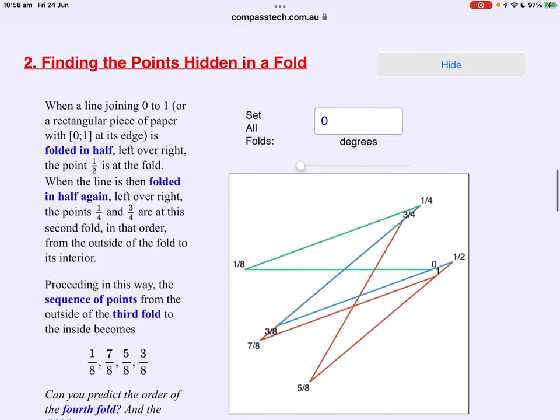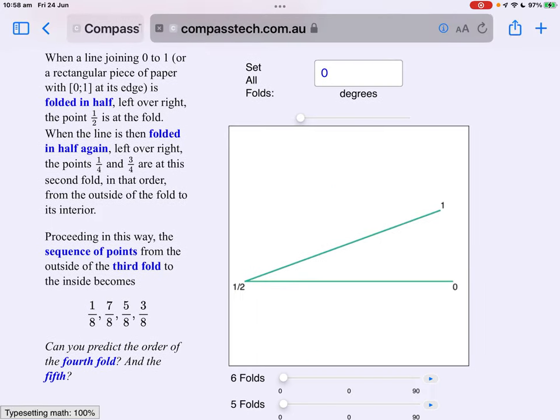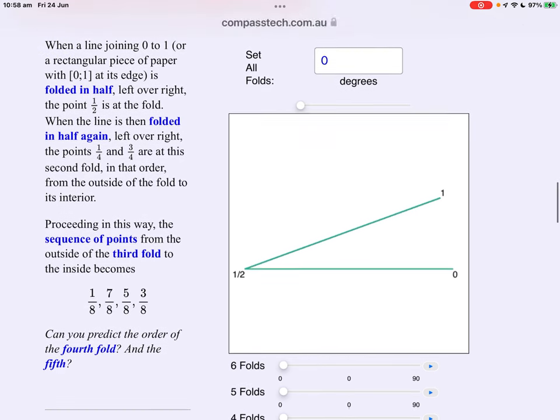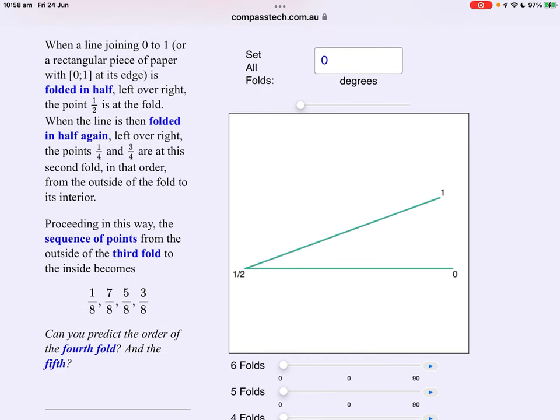Now let's look at our dragon curve from a different point of view. Once again we'll start with an open page and fold it once. But this time we're going to consider the fraction of the page at each fold. So fold it in half. If we consider the right hand side of the page to be zero, the left hand side to be one. When we fold once, a half sits at the fold obviously.